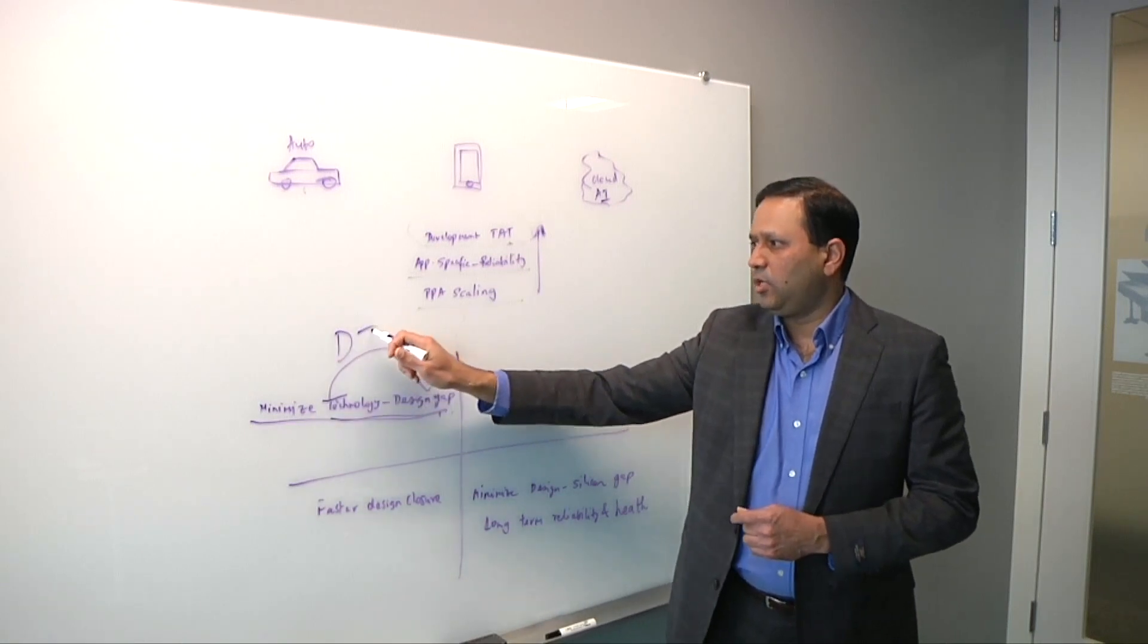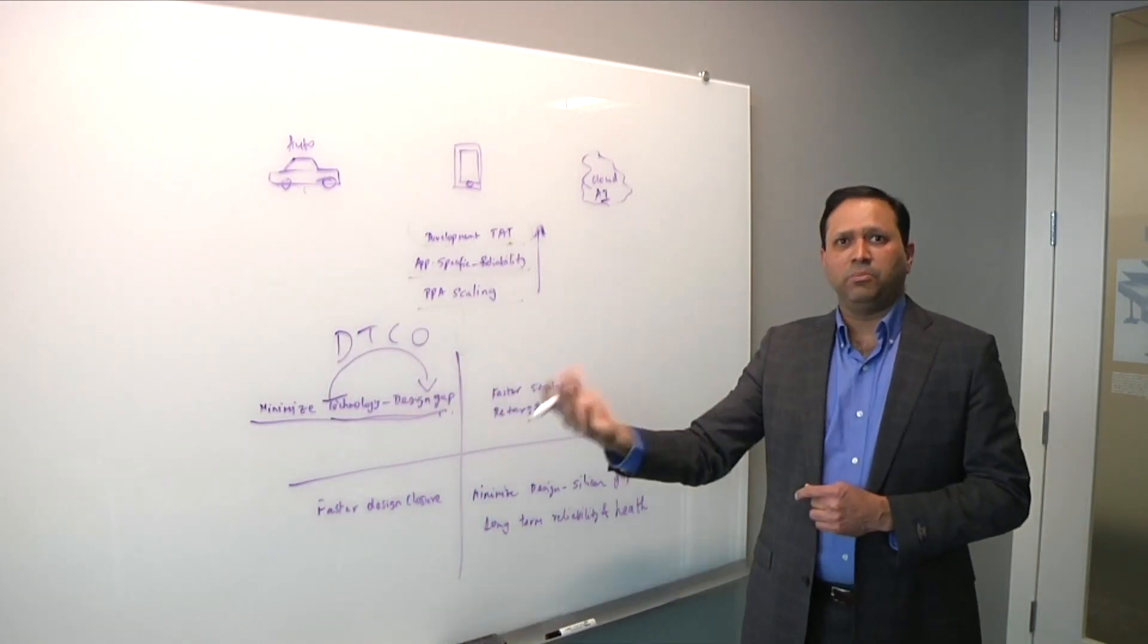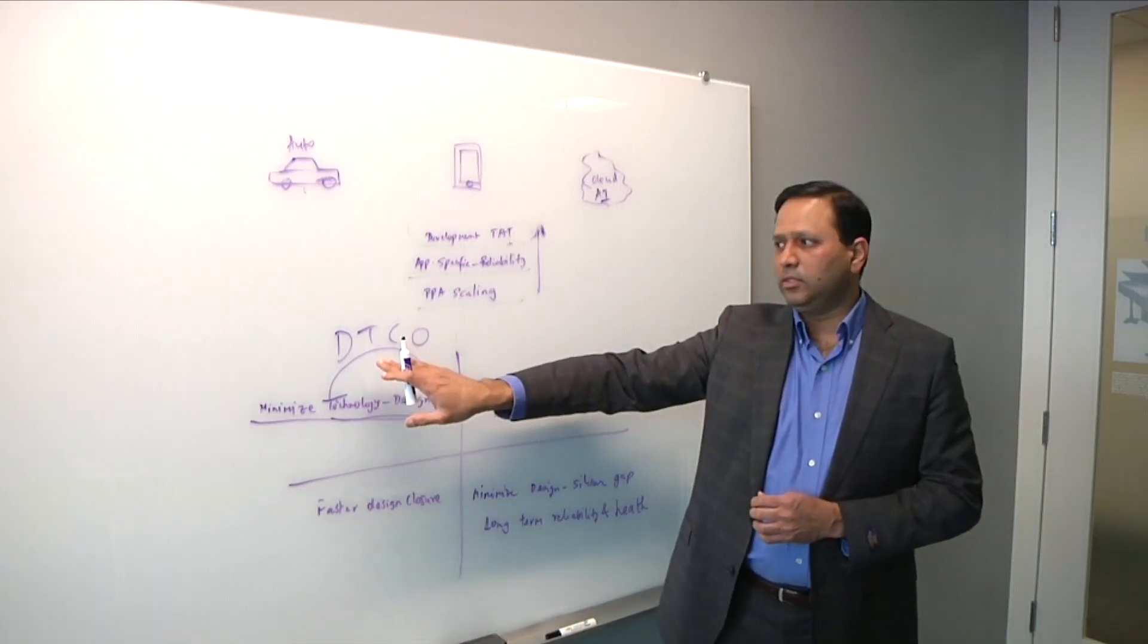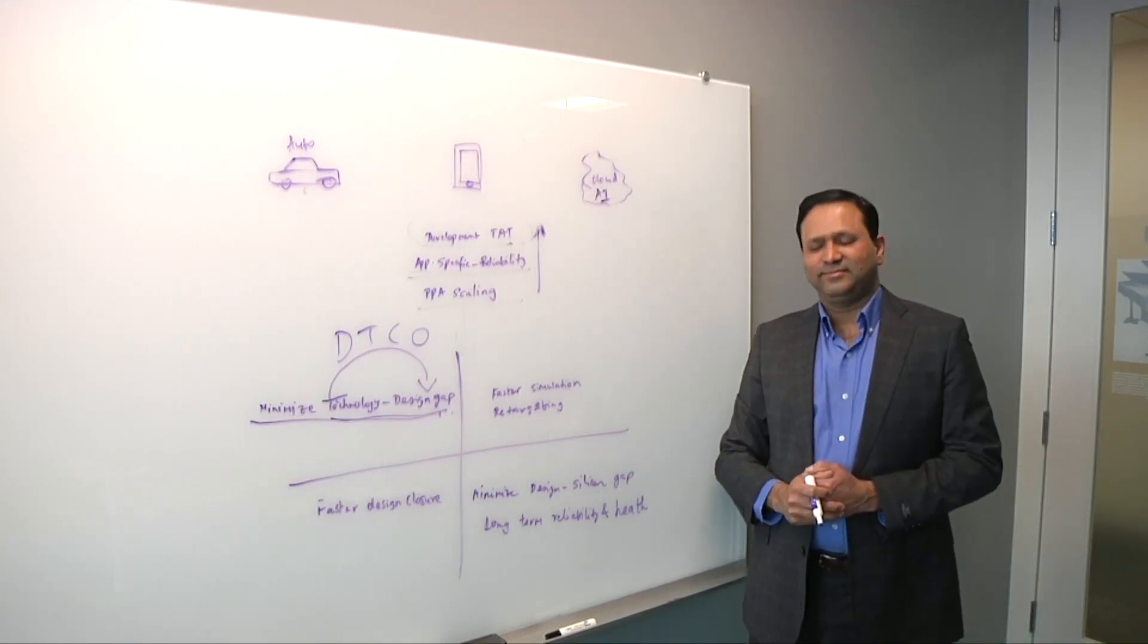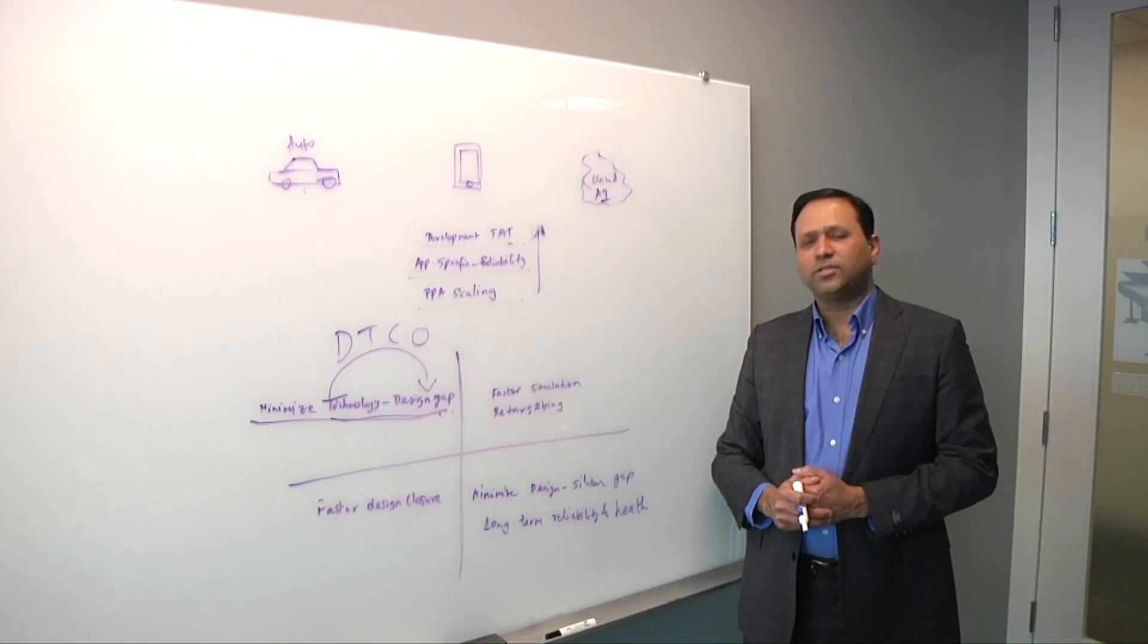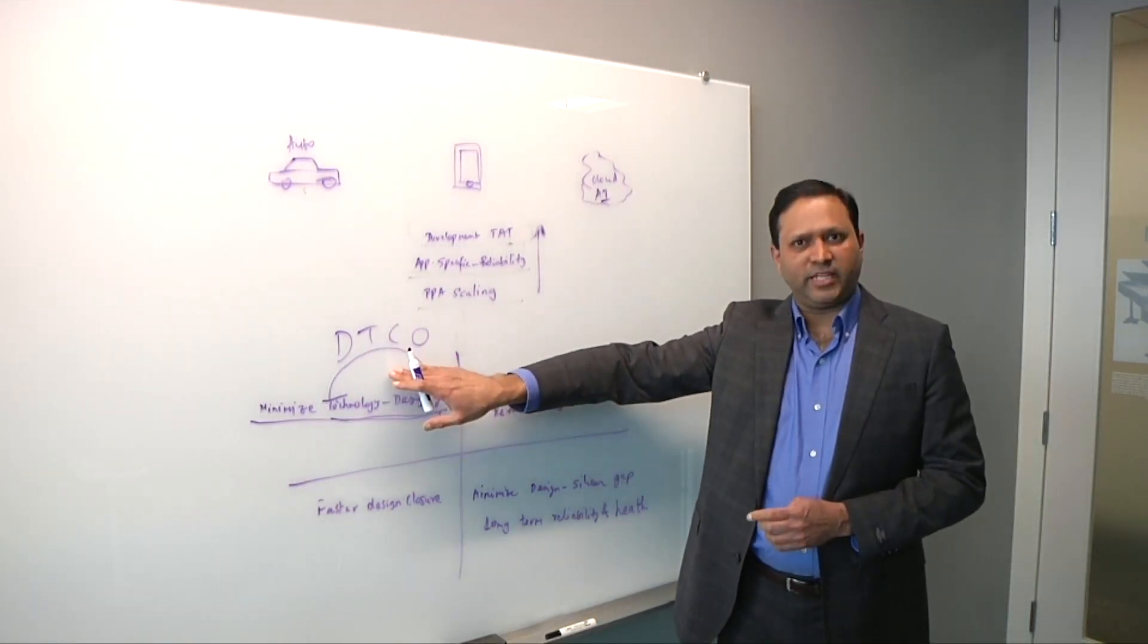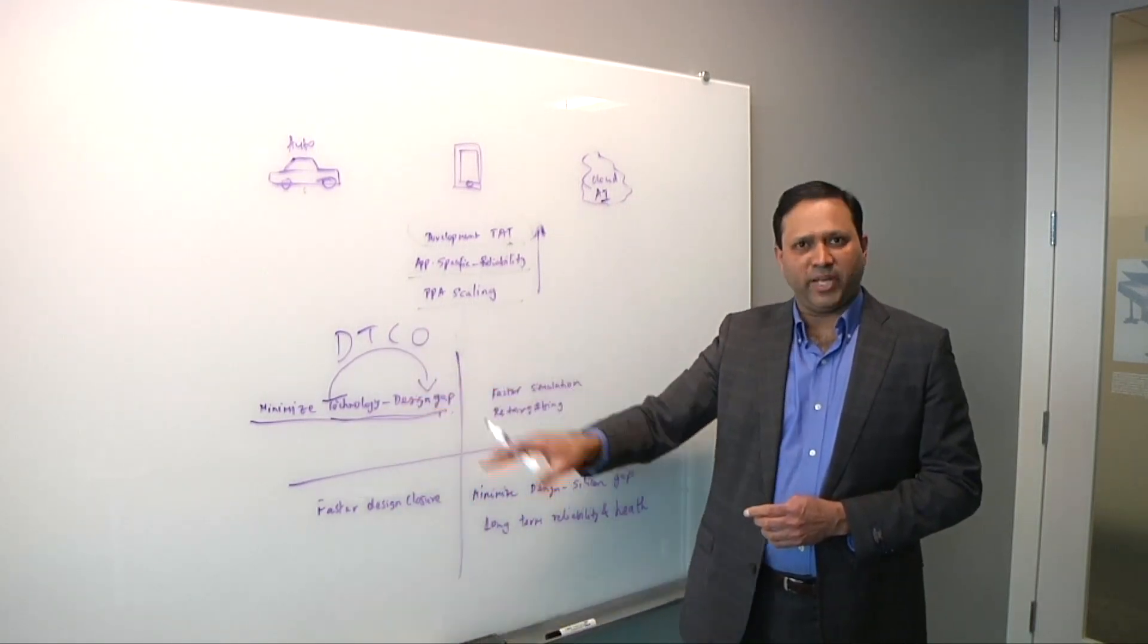And what designers and technologists want is the ability to be able to minimize this gap by what we call as co-optimizing. So technologists, memory technologists and designers want to be able to, as they develop the technology, quickly assess what is the impact of that technology choice on the design and optimize. So that is the co-optimization. So this term is actually called DTCO, Design Technology Co-optimization. This is an emerging paradigm and many of the memory makers are actually focused on this aspect. And we think about what's happened in logic. This has been going on for several different nodes, but we always thought that memory was on its own track. Now they're running into exactly the same problems the logic guys did, right?